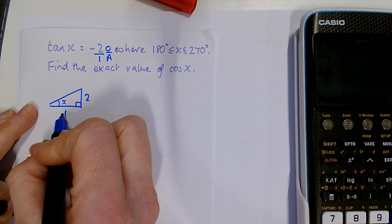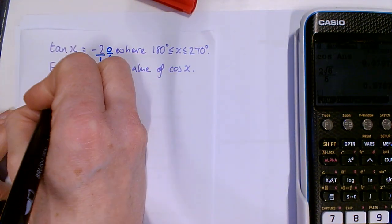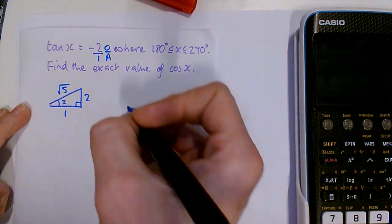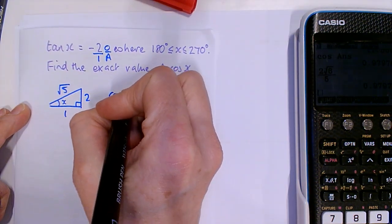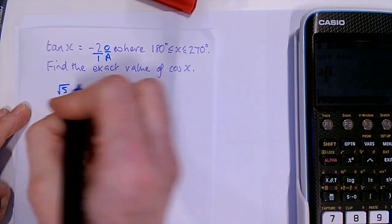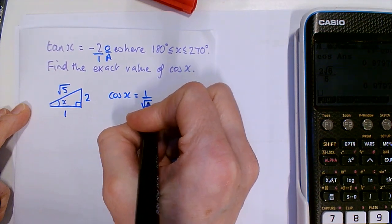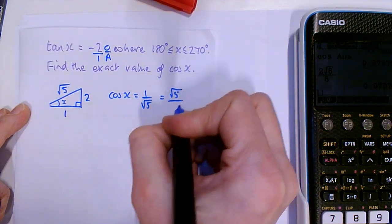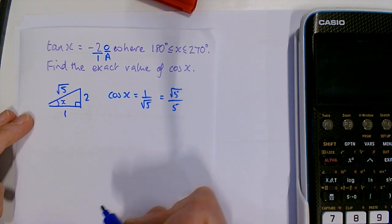We want to find the third side. Use Pythagoras. 1 squared, add 2 squared and square root. And if we want the exact value of cos, we're going to do adjacent over hypotenuse. And if we rationalize the denominator, we get root 5 over 5.